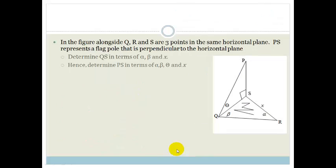Let's look at another example. It says in the figure alongside, Q, R, and S are in the same horizontal plane. So they've calibrated it for us. But if they don't, then you do. Just to make sure you know which one's horizontal. PS represents a flagpole. That is perpendicular to the horizontal plane as shown here. It says determine QS in terms of alpha, beta, and x.